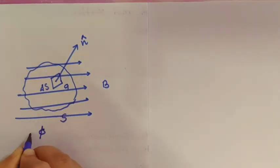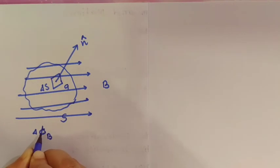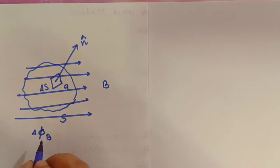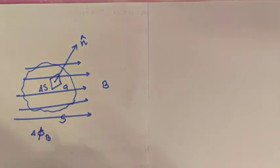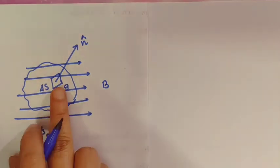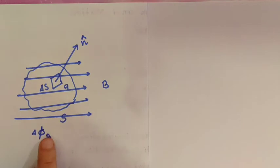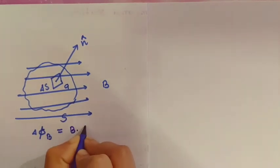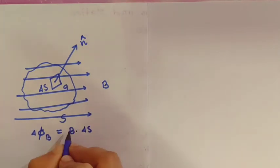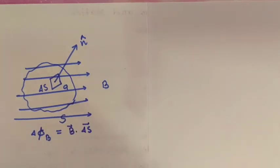Suppose a closed surface S is held in a uniform magnetic field B — the same everywhere. Consider a small vector area element delta S of this surface. Magnetic flux through this area element is defined as delta phi-B, where the symbol phi is used for magnetic flux and B for magnetic field. We can write it as B dot delta S.